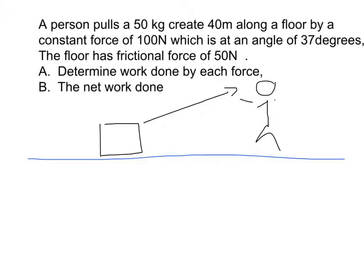We've got an angle, and friction pulling back on it, a force of gravity pulling down, and a tension force pulling up. Now we want to determine the work done by each force and the net work done. Our first step is to do an FBD.